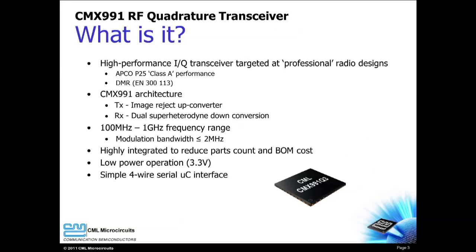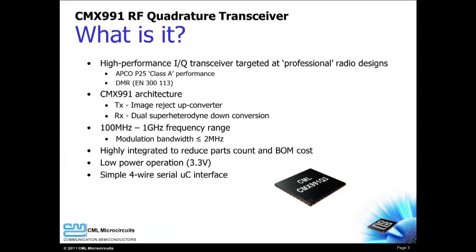So what is it? The CMX991 is a high-performance IQ transceiver targeted at demanding applications. Both APCO P25 and DMR are supported. This device achieves its high level of performance with an image-reject up mixer for transmit and a dual superheterodyne down converter for receive. Frequency range from 100 MHz to 1 GHz and modulation bandwidths up to 2 MHz are supported. A high level of integration allows the CMX991 to reduce your parts count and bill of materials cost, and it provides low power operation with a simple serial microcontroller interface.